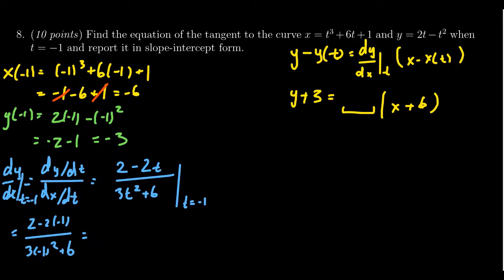So on the top, you get a negative 2 times a negative 1, which is a positive 2. On the bottom, negative 1 squared is a positive 1, so you get 3 plus 6 there. So on the top, you get 4. On the bottom, you get 9.